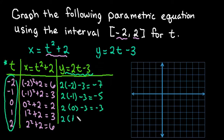2 times 1 minus 3 gives me negative 1. And then the last one 2 times 2 minus 3 gives me 4 minus 3 is positive 1.